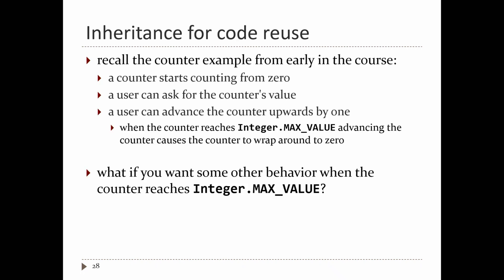The generally accepted wisdom is to favor composition over inheritance, but inheritance is still useful. The simplest example for proper code reuse is the Counter class we saw earlier in the course. All counters start from zero, count upward in increments of one, and when they hit max value, wrap around to zero. Someone might want different behavior when hitting max value — instead of wrapping, maybe they want the counter to stop. You can subclass Counter and change how advance() works.